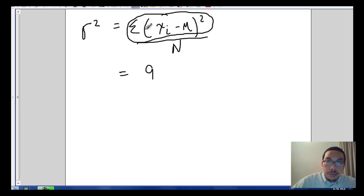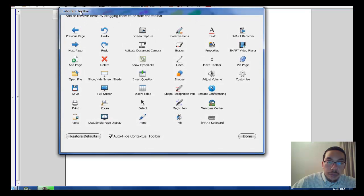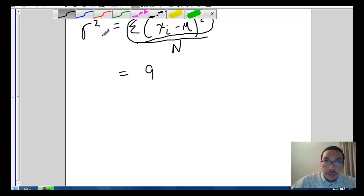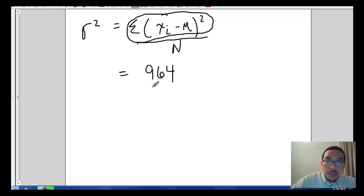So basically this part right here is the 964, and we divide that by n. And we said that n is our total number of data values within that population. There were 10 test scores there, so we divide that by 10.